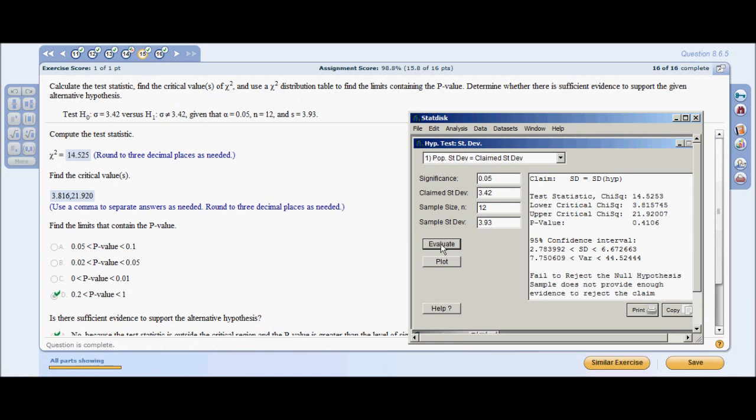Number 15: Calculate the test statistic, find the critical values of chi-squared, and use a chi-squared distribution table to find the limits containing the p-value. Determine whether there is sufficient evidence to support the given alternative hypothesis. You're given a string of data here that fits beautifully into your StatDisk. We're going to stick with hypothesis test standard deviation of 1. And you're going to choose your first option here of population standard deviation equals claim standard deviation. Your standard 0.05 significance, claim deviation of 3.42.